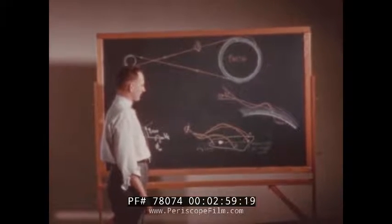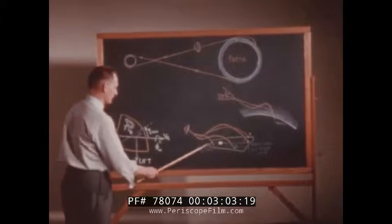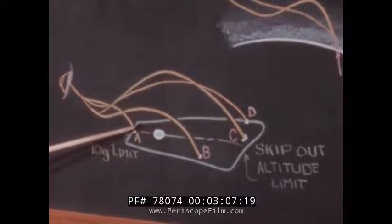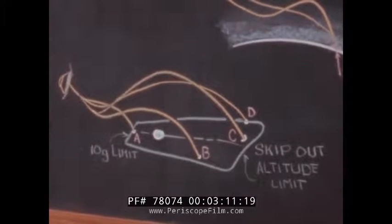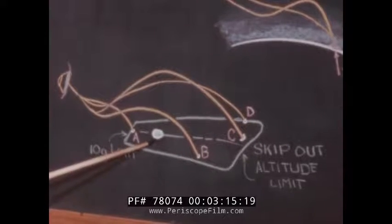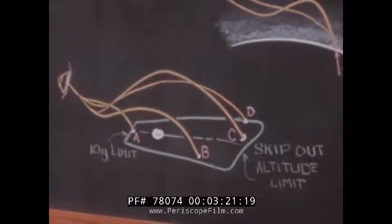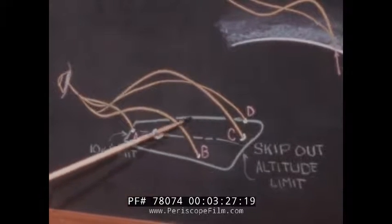Corresponding to any stage during re-entry, a typical footprint of landing points could be drawn connecting all the landing points achieved with trimmed lift and modulated lift vector angle. Within this locus lies the zero lift impact point, achieved on Apollo by rolling the vehicle at a steady rate above a minimum value. For the target to be accessible, it must always lie within the current footprint boundaries.